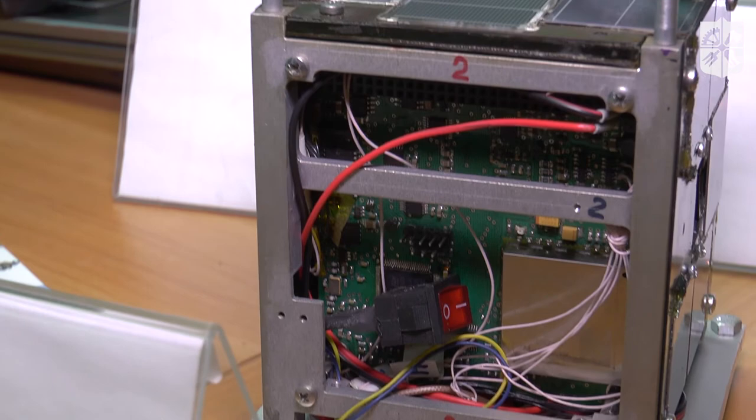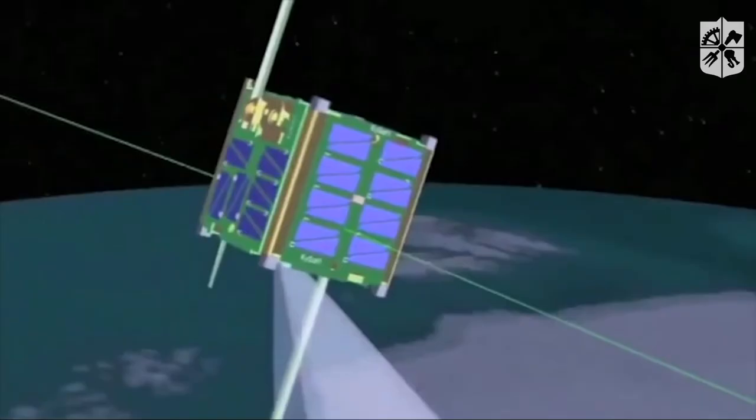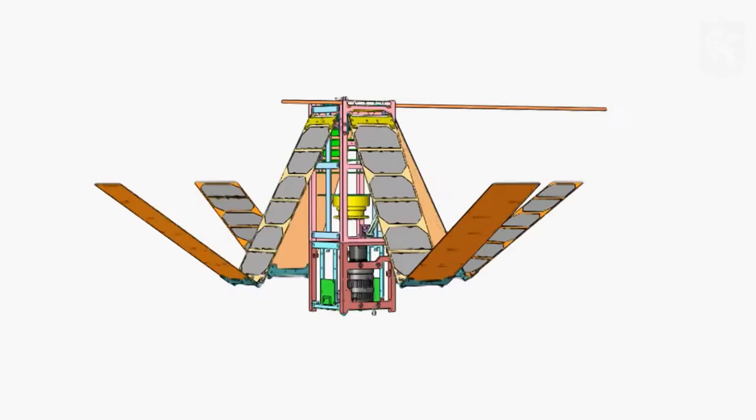The first nanosatellites designed in Ukraine were the ones designed by the specialists of our faculty. The first of them, Polytan-1, is already in the orbit of our planet, and now the development of the third nanosatellite is in progress.